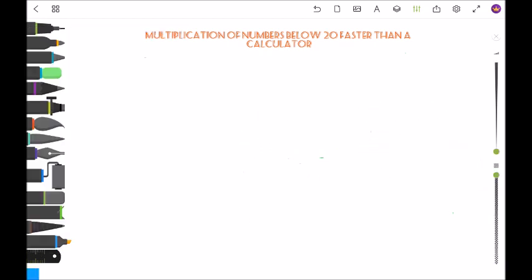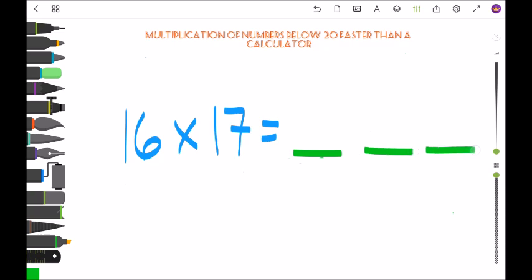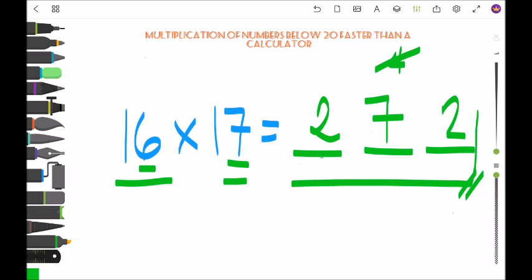Another is 16 times 17. Again, last two digits, 7 times 6 is 42, so 2 carry 4, and then 16 plus 7 is 23 plus 4, 27. So 16 times 17 is 272.